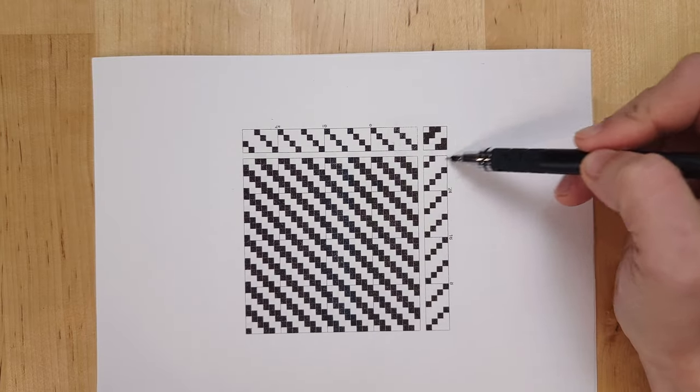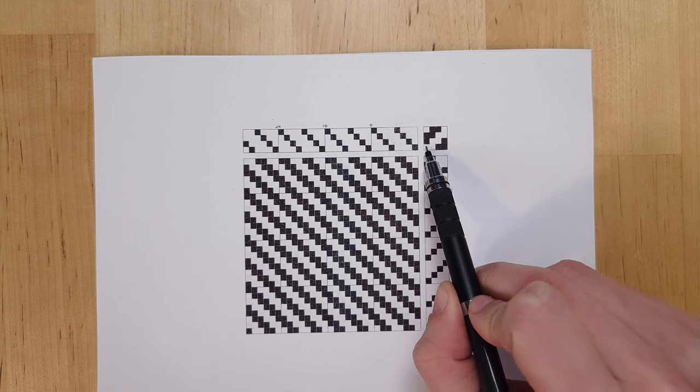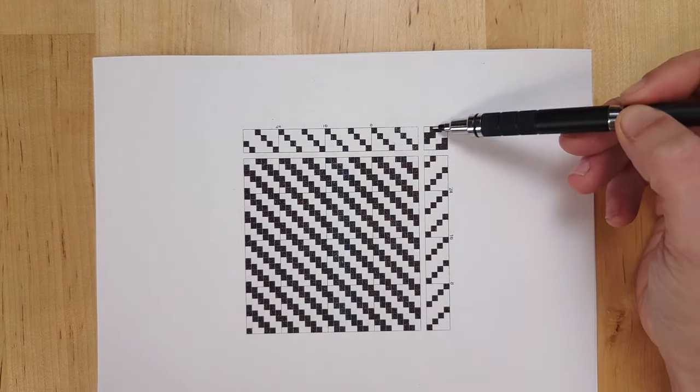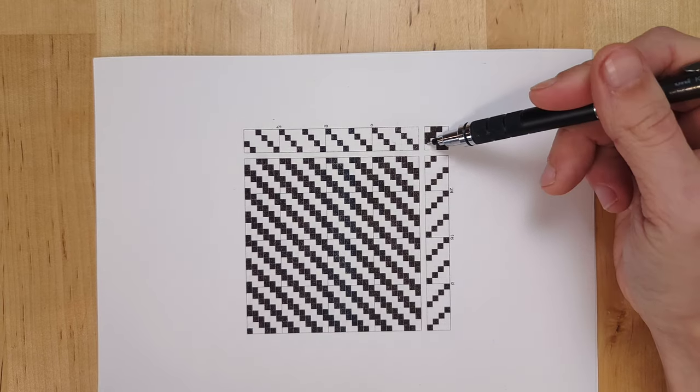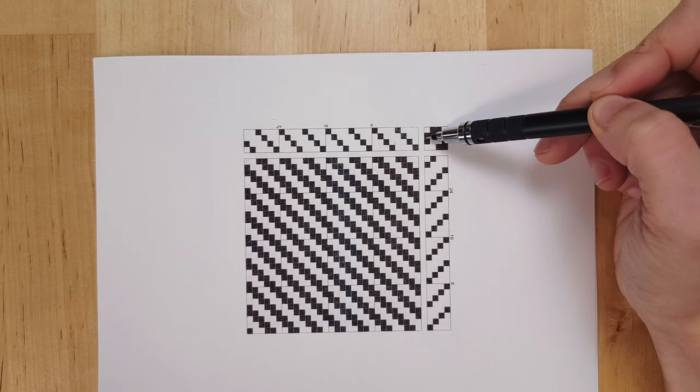So you have your tie up here and you can see that it relates to the threading and treadling. This has four rows, which represents the shafts, and four columns, which represents the treadles. Each of these filled squares tells you which treadle needs to be tied to which shaft.